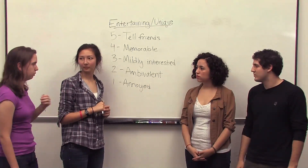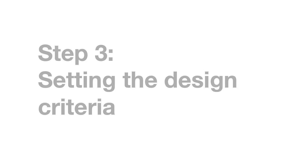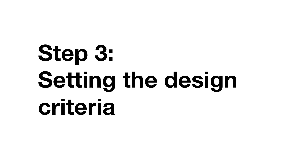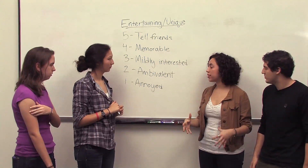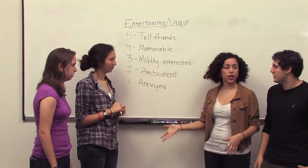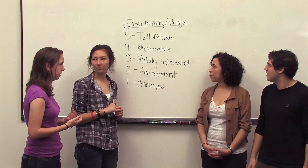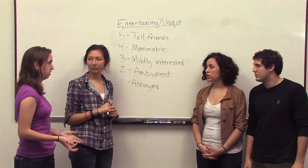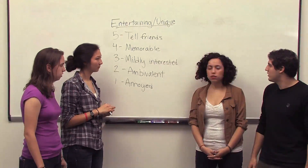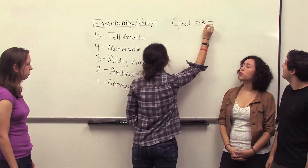Now that we have this scale of 1 to 5, we need to decide where we want our device to land. If we surveyed a bunch of people, what would we want the average to be? Definitely somewhere above a 3, because we don't want people to be annoyed or ambivalent — the whole point of our device is to generate interest. Three is probably too low; we want an actual positive response. So what about a 3.5? It's not so high that it has to stick out in everybody's mind, but it's a little more than halfway. Our goal would be greater than or equal to 3.5 as the average after a survey.